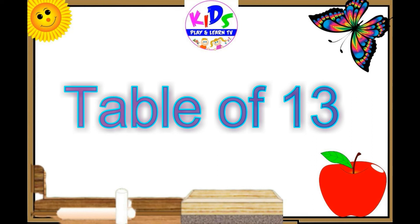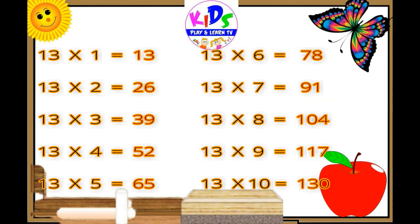Hey kids, let's repeat. 13 ones are 13. 13 twos are 26. 13 threes are 36. 13 fours are 52.